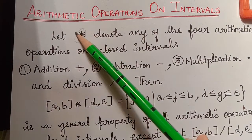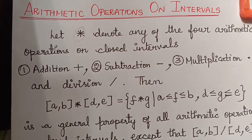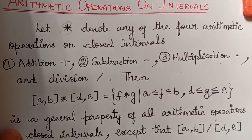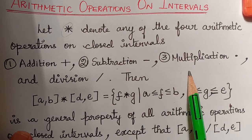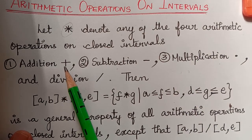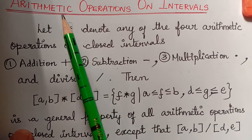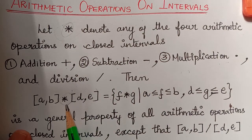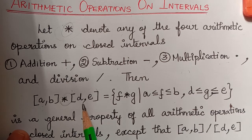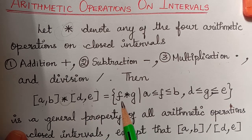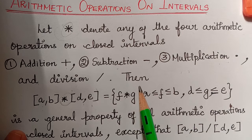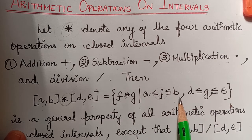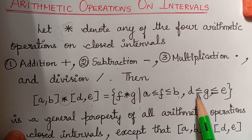Let star denote any of the four arithmetic operations on closed intervals — addition, subtraction, multiplication and division. These operations are denoted as star in general, and it is defined that the star operation of two intervals [a, b] and [d, e] is [f star g] such that f lies in the closed interval [a, b] and g lies in the closed interval [d, e].